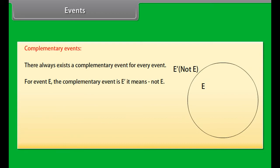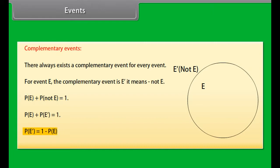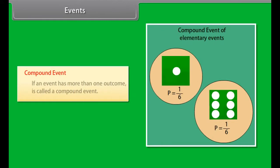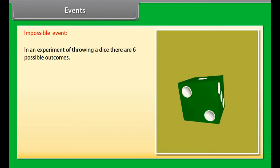Complementary events: there always exists a complementary event for every event. For event E, the complementary event is E dash, meaning not E. Probability of event E plus probability of event not E equals 1. Therefore, probability of event not E is equal to 1 minus probability of event E.